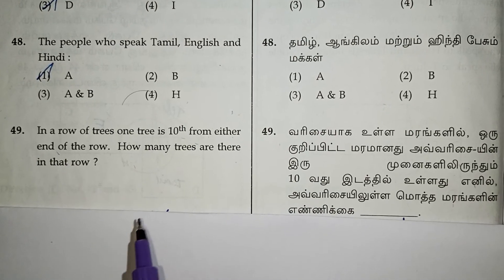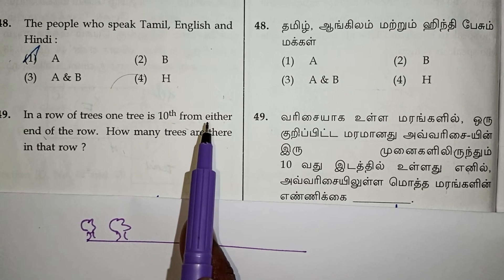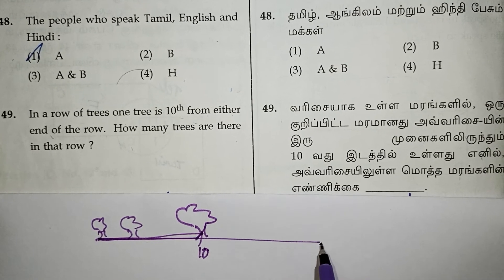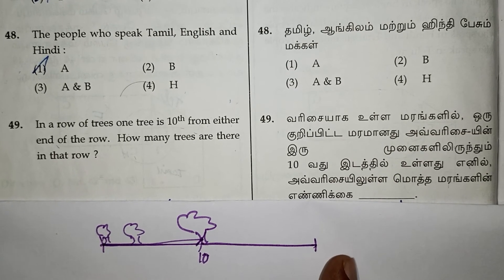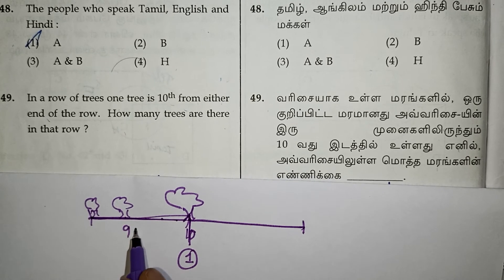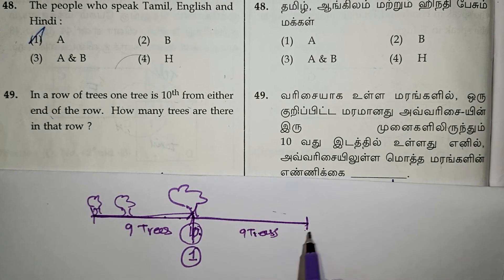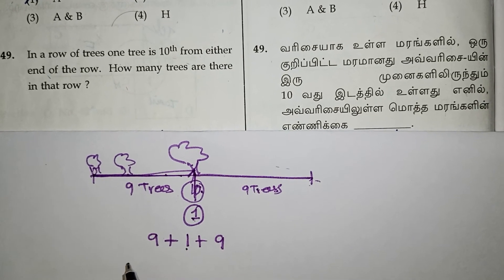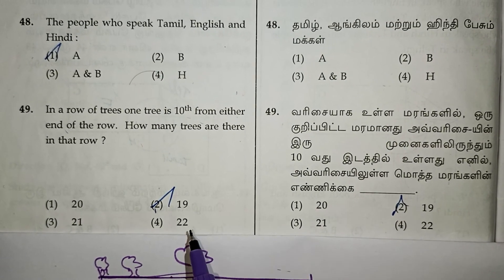Next question: in a row of trees, one tree is 10th from either end of the row. How many trees are there in the row? If a tree is in the 10th position from one end, there are 9 trees before it. From the other end it is also 10th, so there are 9 trees after it. Total trees = 9 + 1 + 9 = 19 trees. The correct answer is 19.